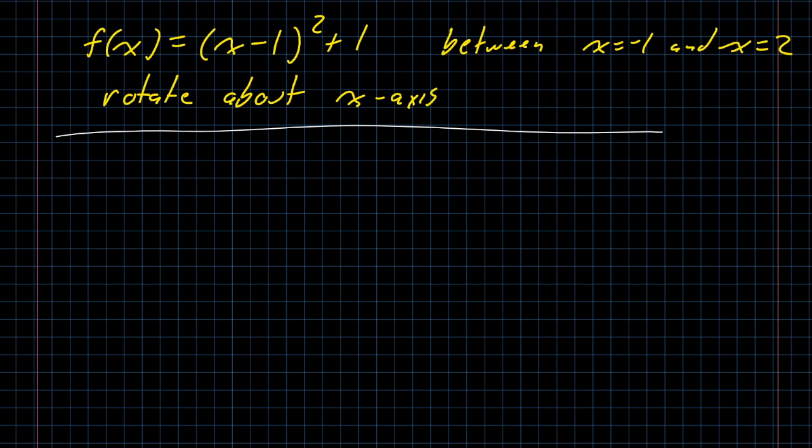f of x equals x squared plus 1. On this region, if you plug in x equals negative 1, you get negative 1 minus 1, which is negative 2, squared, which is positive 4 plus 1, that's 5. And if you plug in x equals 2, you get 2 minus 1, which is 1, squared, which is 1, plus 1, which is 2. So this curve is going roughly between 5 and 2. Halfway between that is 4.